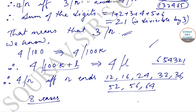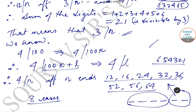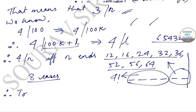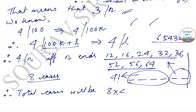For each of these 8 cases, the last two digits are fixed, and the remaining 4 places are filled by the remaining 4 digits, giving 4! arrangements per case. So the total number of arrangements is 8 × 4! = 8 × 24 = 192, and that is option A.